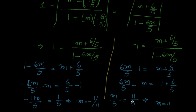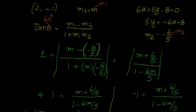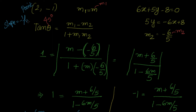So we have found two slopes: m = -1/11 and m = 11. We can now go ahead and find the equations, because we know the point is (2, -1) and we have both slopes.